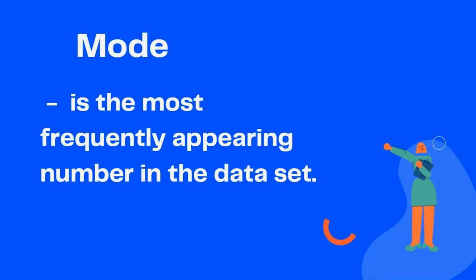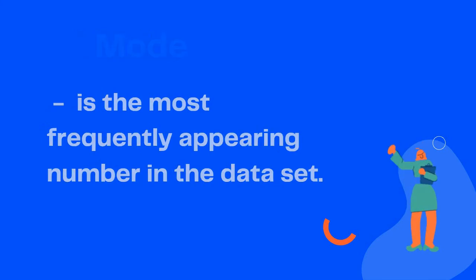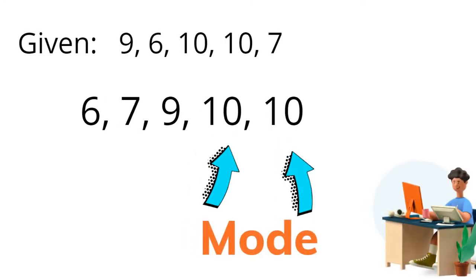Then the mode is the most frequently appearing number in the data set. So if we have again 9, 6, 10, 10, 7, we have to arrange that first in increasing order, and then observe the most frequently appearing number in the given data set.